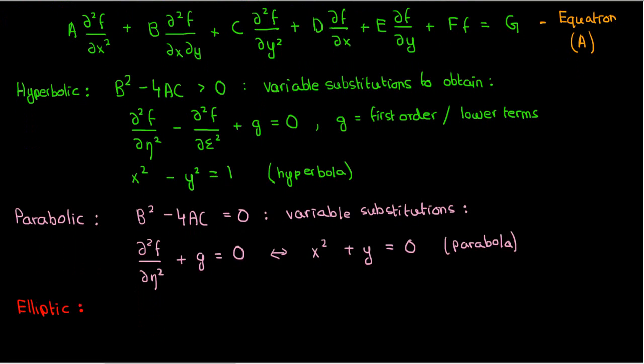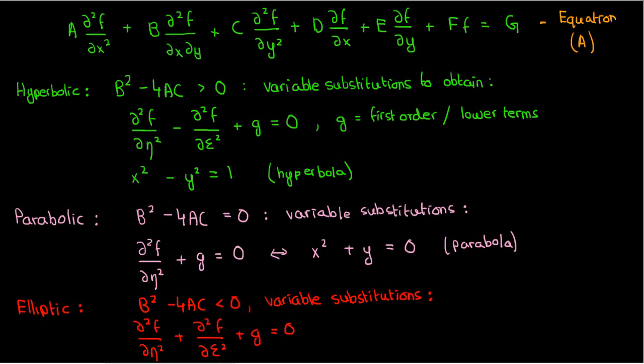Finally, an elliptic PDE satisfies B² - 4AC is less than 0. The right variable substitutions would reduce the elliptic PDE to the following standard form equation: d²f/dη² plus d²f/dξ² plus g equals 0. Just as the hyperbolic and parabolic standard form equations were similar to the equations for conic sections, the standard form PDE for elliptic equations also looks like x² plus y² equals 1. Now, the equation of an ellipse that isn't actually a circle, but a circle is a kind of ellipse anyway, just as how a square is a special type of rectangle, so it doesn't matter.